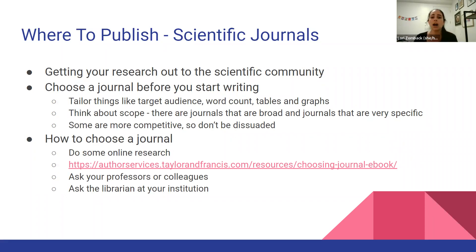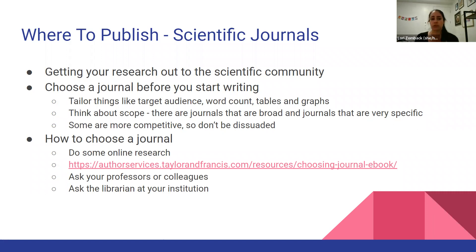When thinking about how to choose your journal, a great place to start is a simple Google search. You can also use the link we've provided, which links to a free ebook that will help you narrow down your search. You can also ask professors, colleagues, or a librarian at your institution. If you have a PI for your project, they'll have a good idea of where to publish. Once you know where you're going to publish, then you want to know how — different journals have different types of articles: a major article, a brief report for smaller scale or pilot studies, a case report, even a letter to the editor. A lot of scientific journals do have letters to the editor.